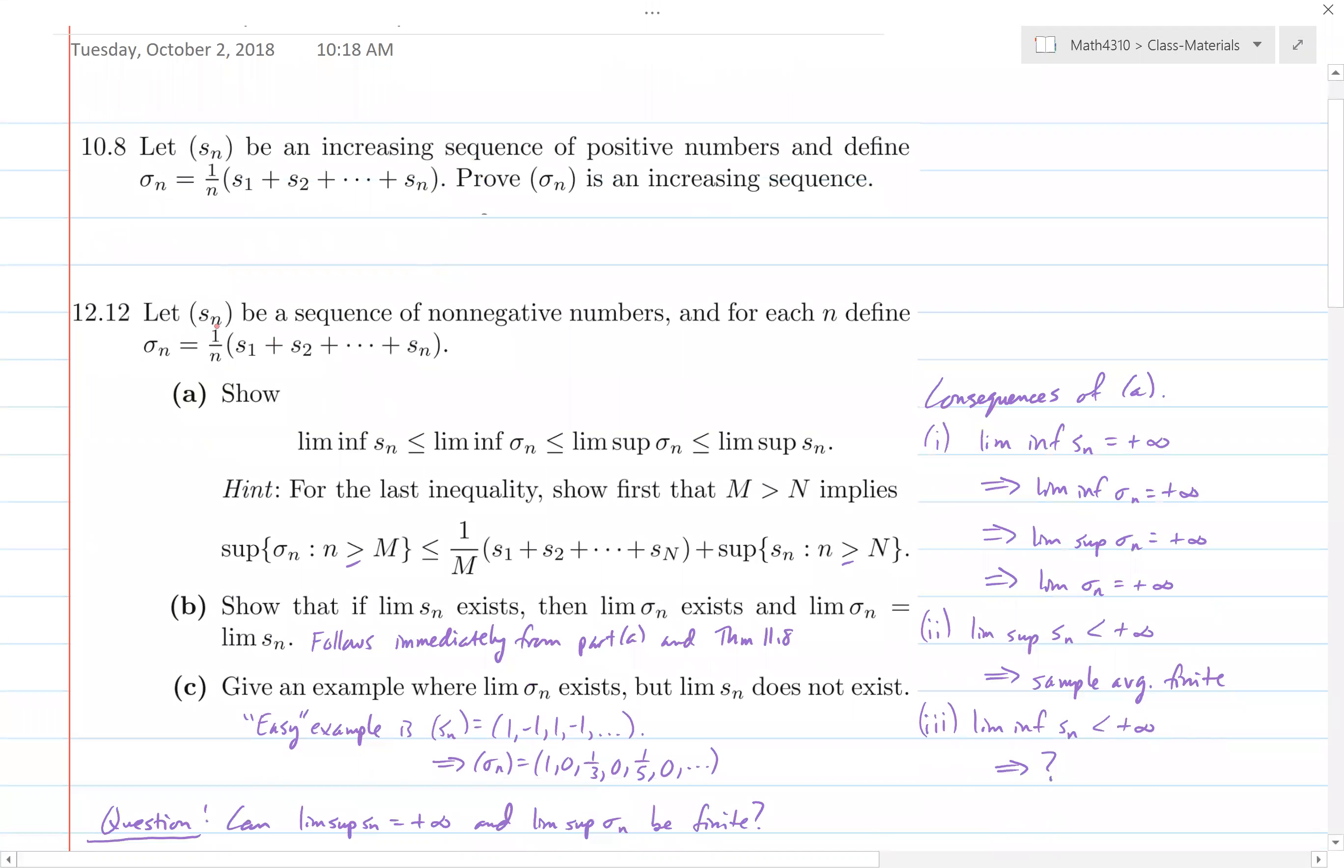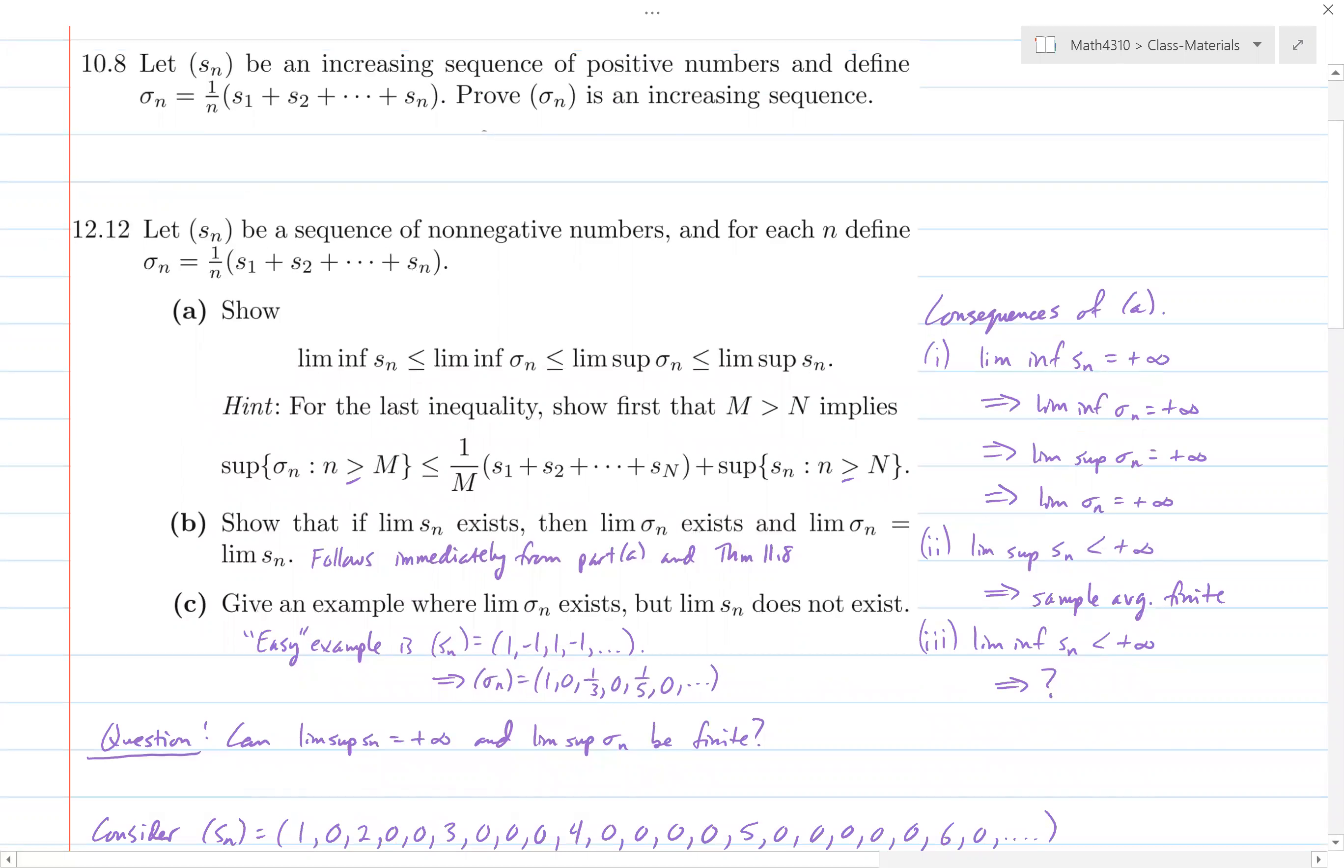And then that same type of averaging sequence is used in 12.12, although there the sequence Sn is not considered to be increasing. It's just a sequence of non-negative numbers. And in this result, I'm going to spend a little time actually talking about this one before I go through the proofs, is you're asked to show that the lim-inf of Sn bounds the lim-inf of the averages, which is clearly bounded by the lim-sup of the averages, because there's that relationship between lim-inf and lim-sup. And then that itself, that lim-sup of the sigma n's, is bounded above by the lim-sup of the Sn's. And then there's this kind of hint that looks maybe a little crazy and bizarre, but we went through why that's useful, and we'll get to that again.